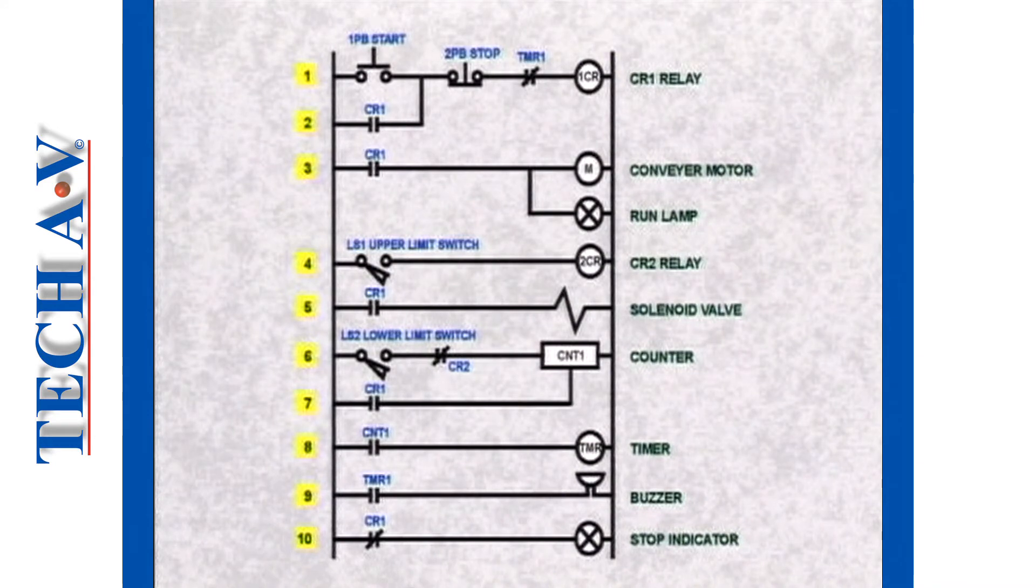This is the relay logic diagram of our sorting machine, the master plan, as it were, of the control system, since it tells us how all the various control devices are wired together to create the automatic sequence of events upon which the machine relies to carry out its sorting operation successfully. Let's explain the elements of a ladder diagram step by step.